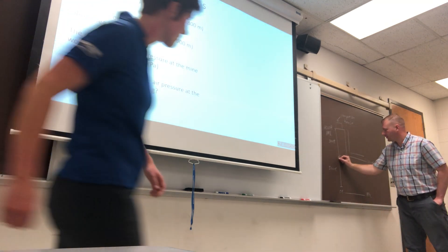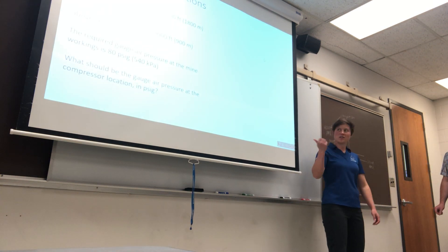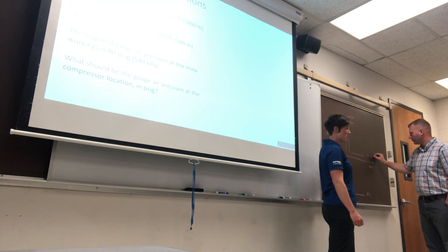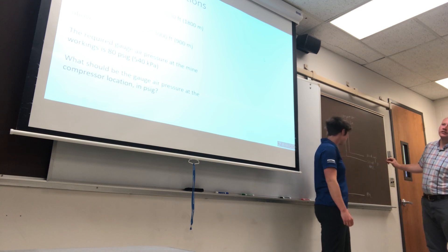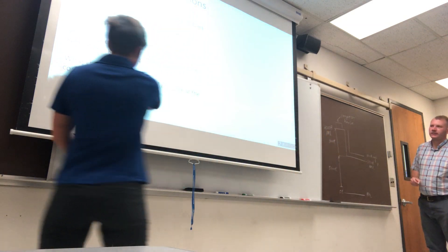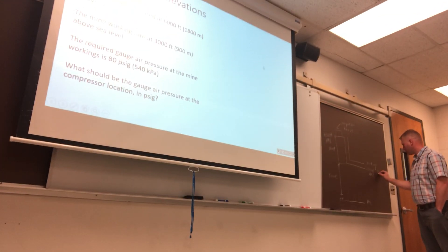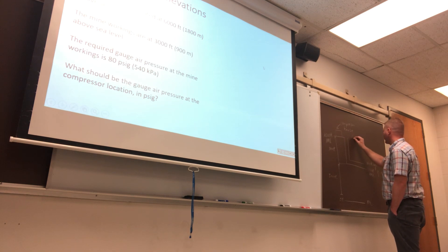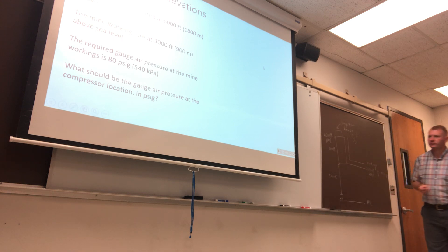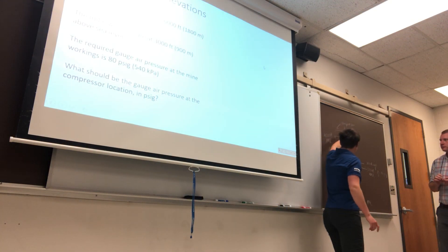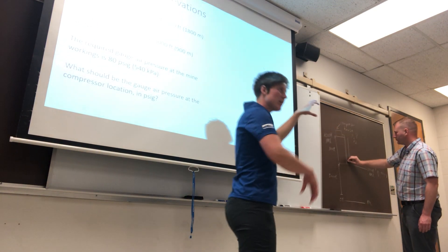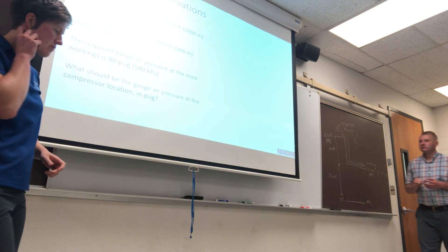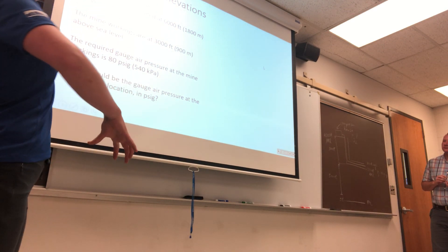This might be closer to what you want, dimension wise. Yeah, because we drew those equations up earlier with our sea level, because we're going to base most of our counts off sea level. The workings want 80 PSI gauge. Would this be PG-1? Yeah, you can say it's PG, 80 PSI. And it's asking what's the gauge pressure at the compressor. So do a PG-2 with a question mark — what is that up top?